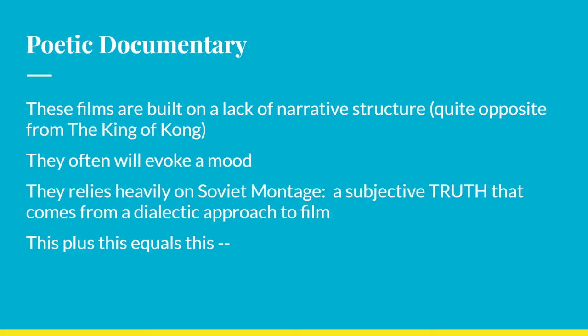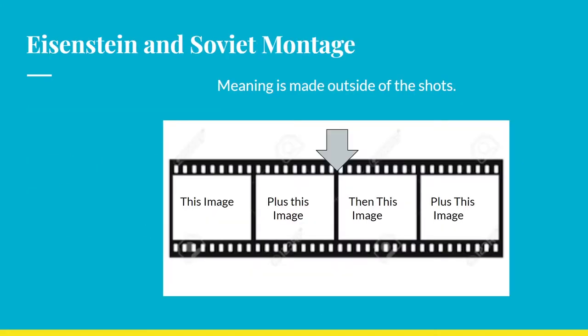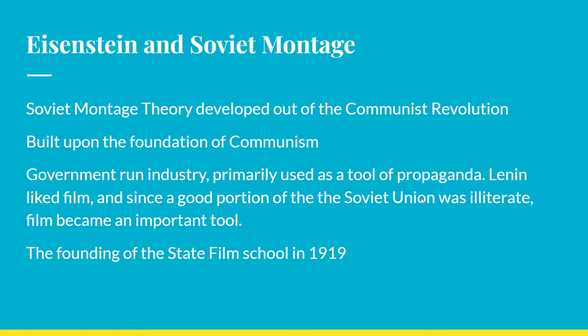So poetic documentary — as I said, they'll evoke a mood and kind of skirt a narrative structure. They rely heavily on something built on Soviet montage: that truth comes from a dialectic approach to film. This plus this equals this. Each of these squares represents a different shot within a film. So this image plus this image gives you meaning — the meaning is found in the coming together of those two things, and then that meaning is built upon with this image plus this image.